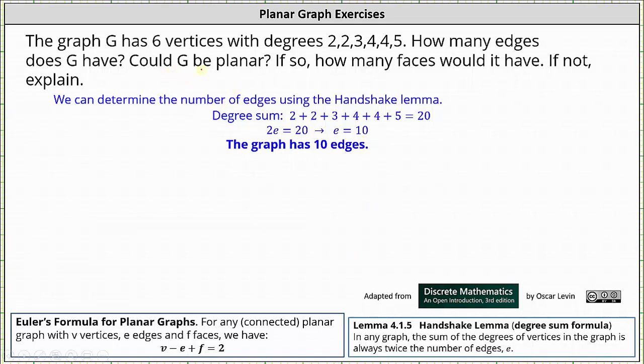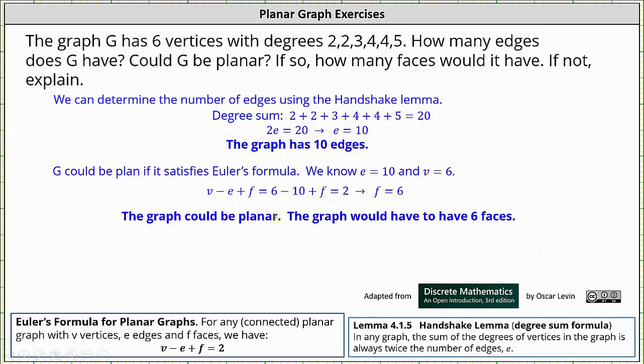Next question is, could G be planar? G could be planar if it satisfies Euler's formula. We know E, the number of edges is 10. We also know the number of vertices V is 6. Using Euler's formula, V minus E plus F equals 6 minus 10 plus F equals 2. We don't know the number of faces yet, but now if we solve for F, notice how we have F equals 6. This indicates the graph could be planar. The graph would have to have six faces.